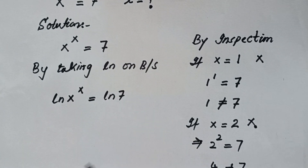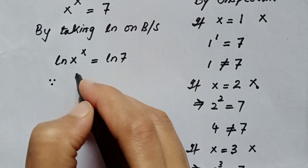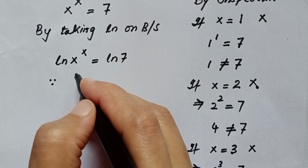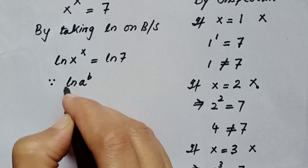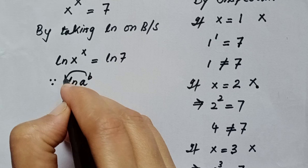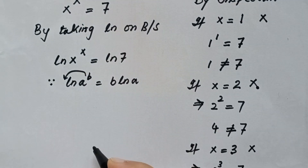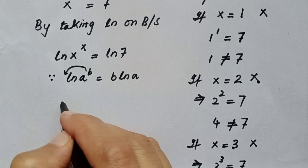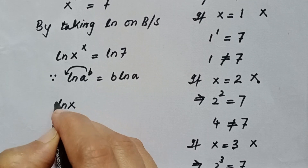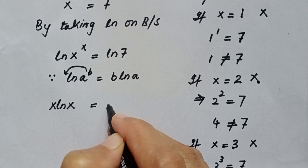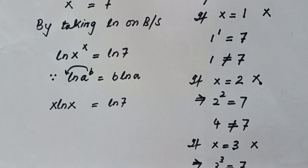Here I will use a property of natural logarithm: if ln(a^b) is given, then b shifts to the front, giving b·ln(a). Applying this property: x·ln(x) = ln 7.